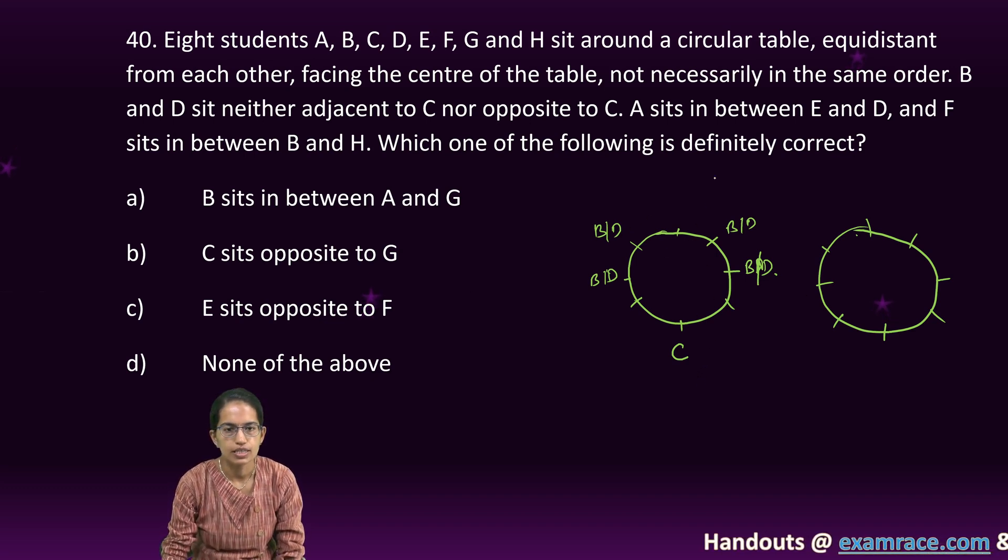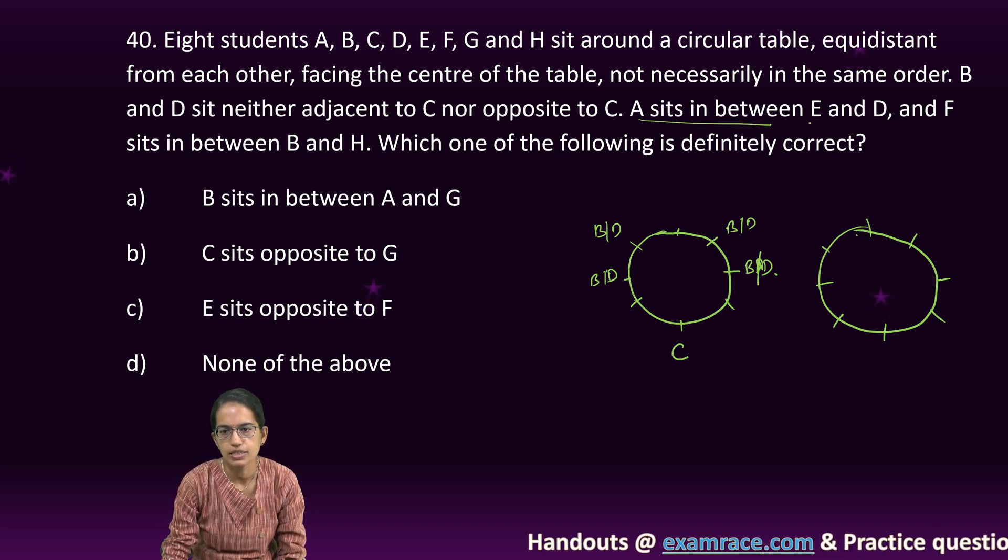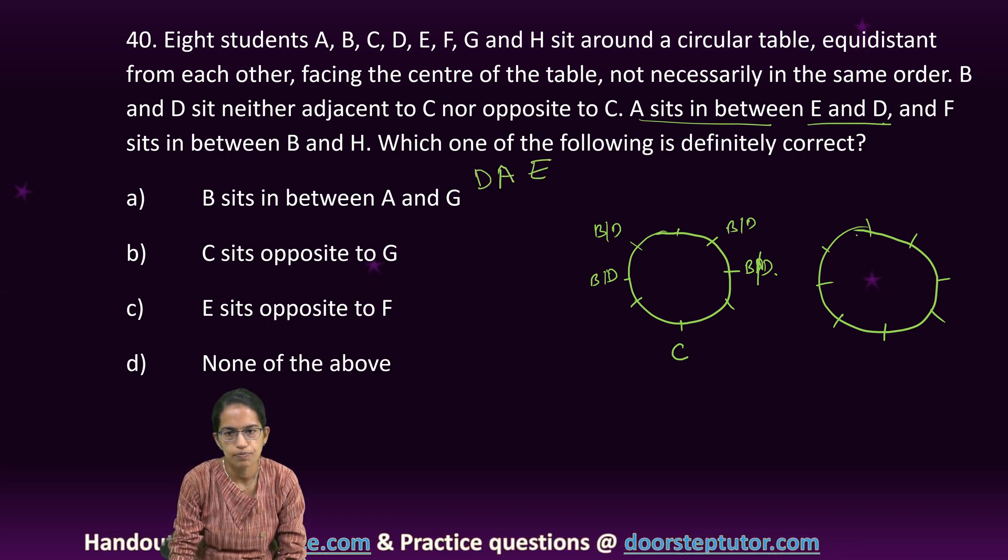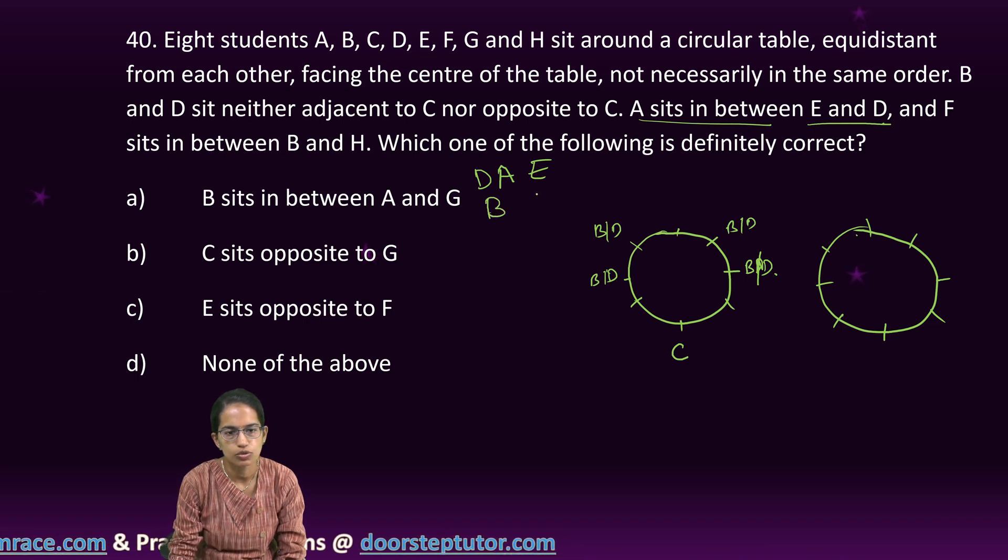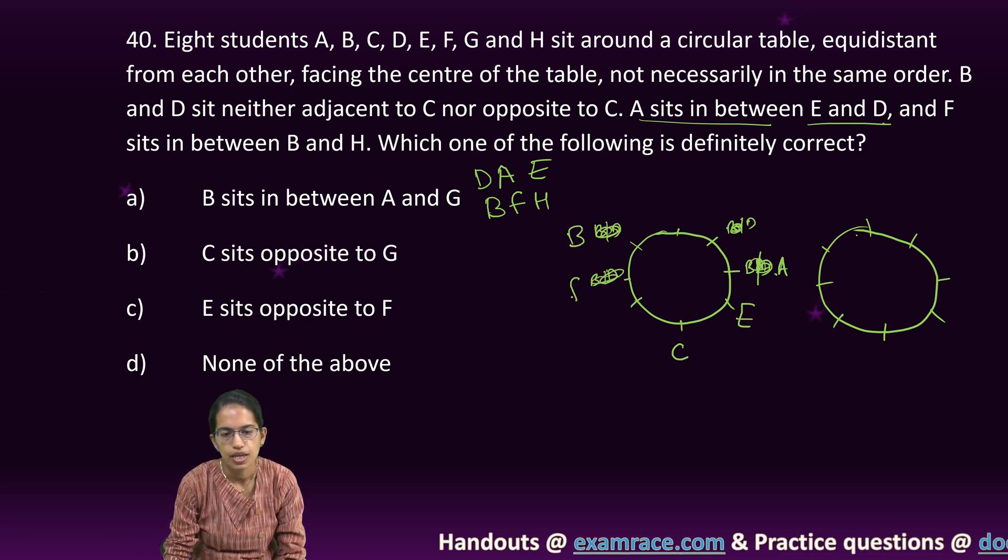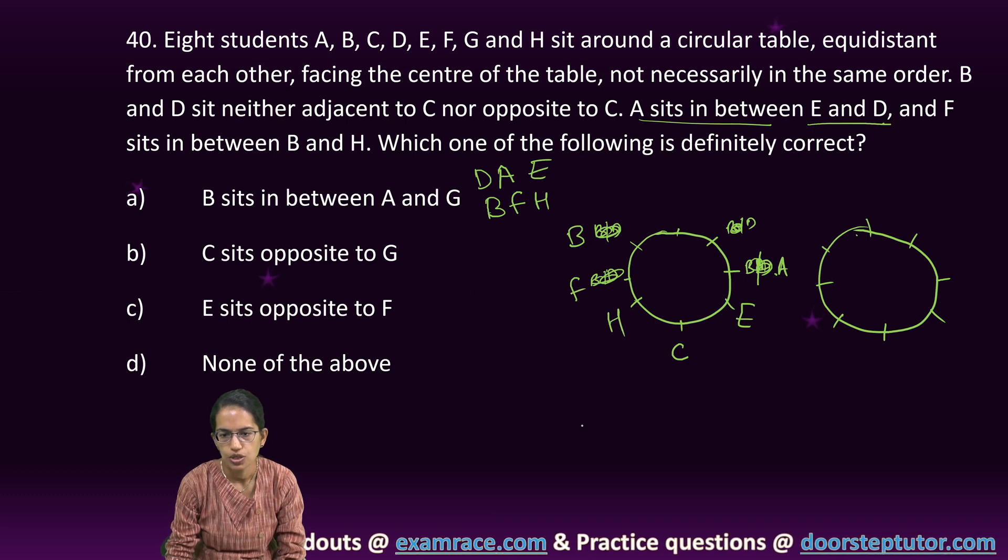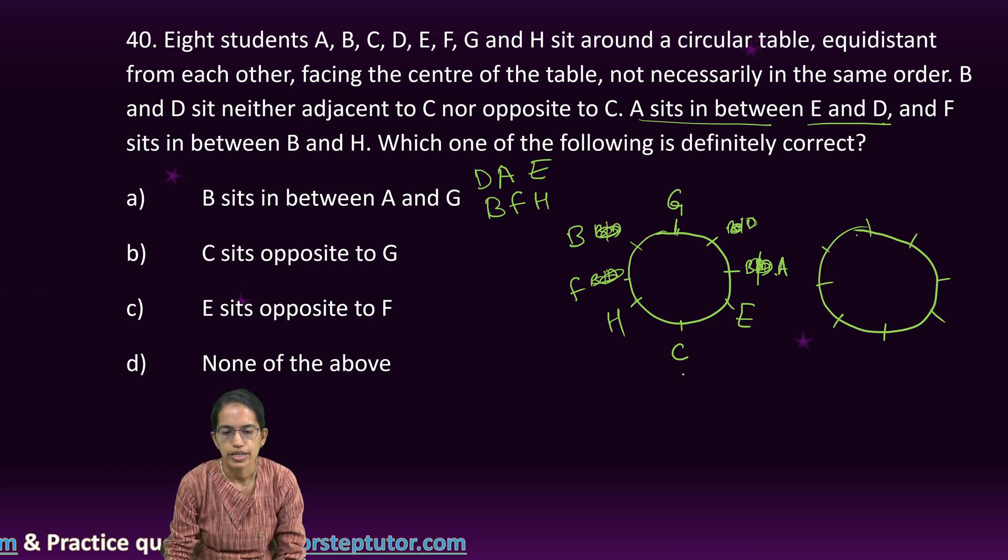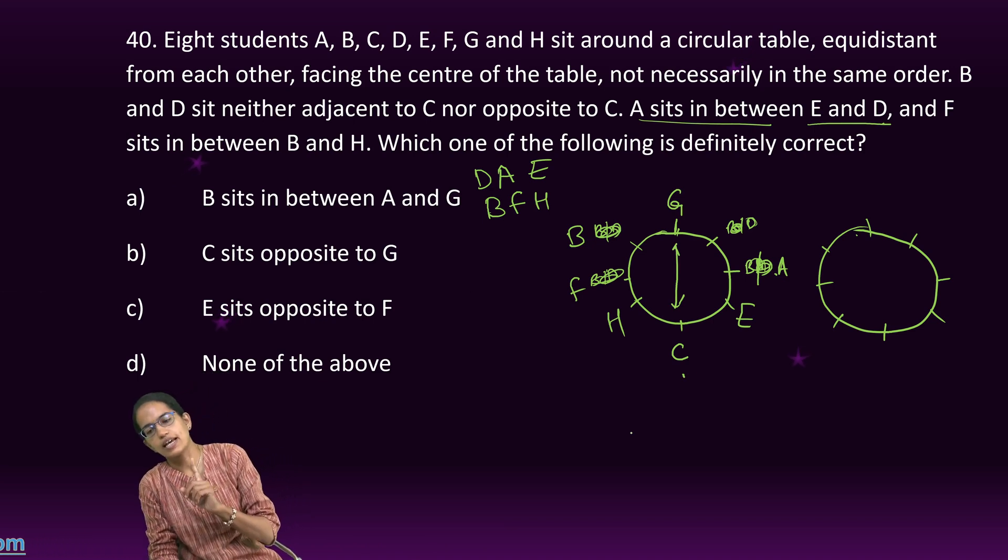It says A sits in between D and E, and F sits in between B and H. Let me consider this as D, so this would be A and E. This as B, so this would be F and H. All conditions are satisfied and I have G here. So C sits opposite to G. That's one case.